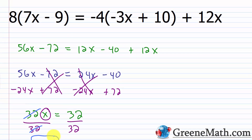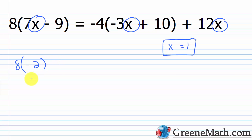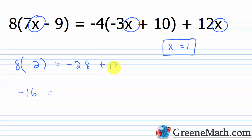Let's check — x equals 1 is our solution. Plugging 1 in on the left: 7 times 1 is 7, minus 9 is negative 2, so 8 times negative 2 is negative 16. On the right: negative 3 times 1 is negative 3, negative 3 plus 10 is 7, so negative 4 times 7 is negative 28. Then plus 12 times 1 is 12. Negative 28 plus 12 is negative 16. So we have negative 16 equals negative 16 — a true statement, confirming x equals 1 is the correct solution.